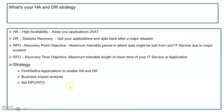The most important topic in the cloud space is HA and DR, which is why it is the most frequently asked question. HA is high availability — keeping your applications available 24/7. DR is disaster recovery — getting your applications and data back after a major disaster. When a disaster occurs in a particular region or zone, you need to ensure your data is recovered and services are restored. RPO and RTO are recovery point objective and recovery time objective — the tolerable periods of downtime.